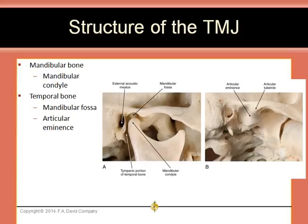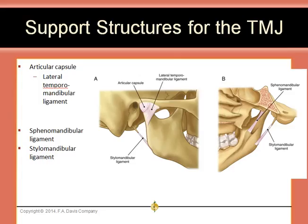In the temporomandibular joint, or TMJ, the condyle of the mandible articulates with the temporal bone. The articular eminence is the anterior sloping surface of the mandibular fossa on which the mandible glides during opening of the mouth. Opening of the mouth requires two movements: hinging, which partially opens the jaw, and gliding, which slides the mandibular condyle forward over the articular eminence. These two movements are also referred to as rotation and translation. The TMJ is enclosed by an articular capsule, and a thickening on the lateral surface of the capsule is known as the lateral temporomandibular ligament. The TMJ is stabilized by the sphenomandibular and stylomandibular ligaments.